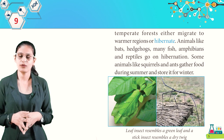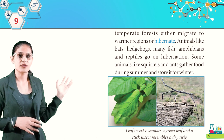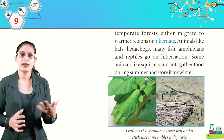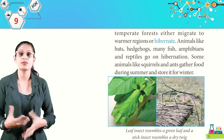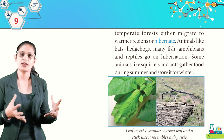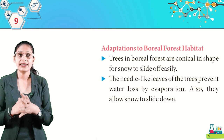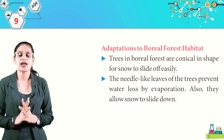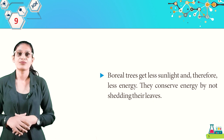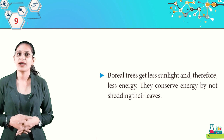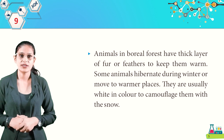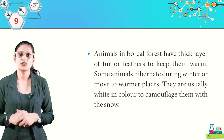Leaf insects resemble a green leaf and stick insects resemble a dried stick — this is camouflage. In boreal forests, trees are conical in shape so snow slides off easily, and needle-like leaves prevent water loss by evaporation. Boreal trees get less sunlight and conserve energy by not shedding their leaves. Animals in boreal forests have thick fur or feathers to keep warm, some hibernate during winter or move to warmer places, and are usually white-colored for camouflage with snow.